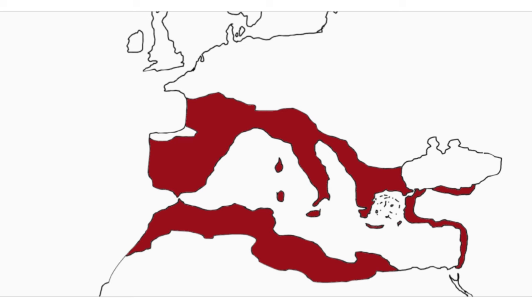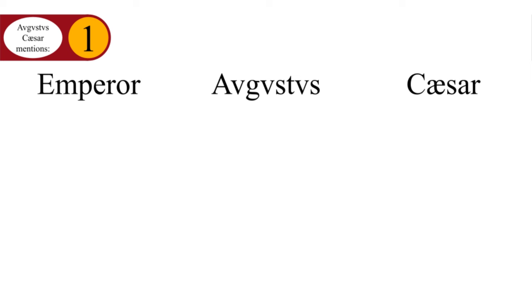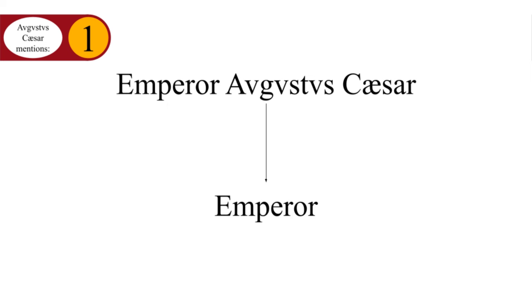Welcome back to the Roman Empire. When we last left off, Emperor Augustus Caesar, whose name translates to Emperor, Emperor, Emperor, was, by any definition, an emperor.